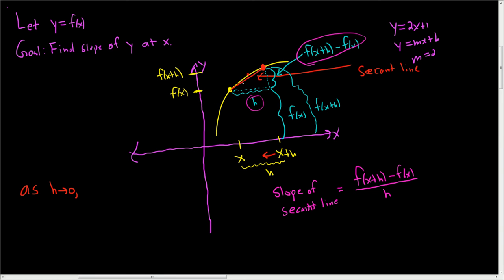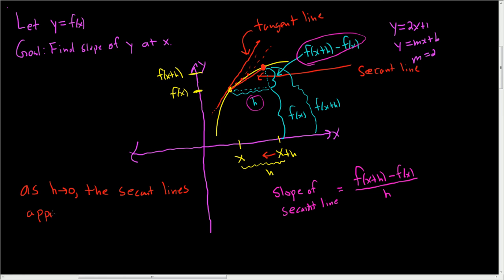When that happens, you're going to get another secant line, and eventually you're going to reach a line that just touches at x. The secant lines will approach this other line, which is called a tangent line. So as h approaches zero, the secant lines approach the tangent line. That means the slopes of the secant lines approach the slope of the tangent line.